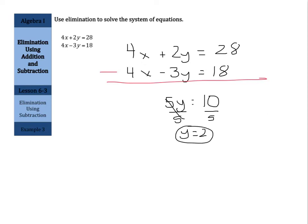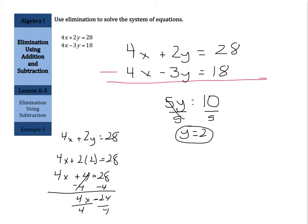Now you can pick either equation. I'll jump back up to the first. Just, why not? 4x plus 2y equals 28. Put in 2 for y, or substitute in 2 for y. 4x plus 2 times 2 equals 28. 2 times 2 is 4, so 4x plus 4 equals 28. Solve this two-step equation, subtract 4 from both sides. 4x equals 24. And if I divide by 4 on both sides, I get x equals 6.